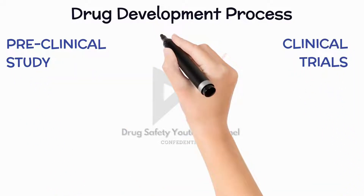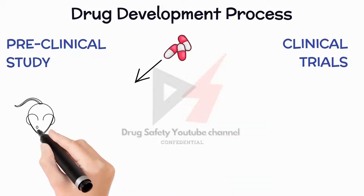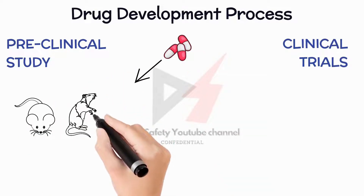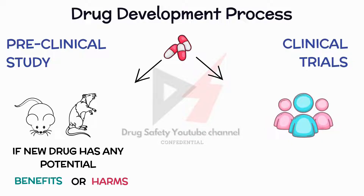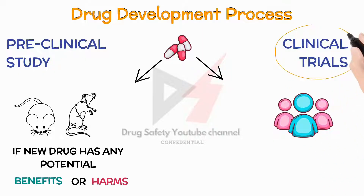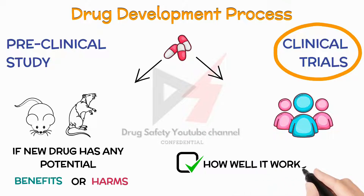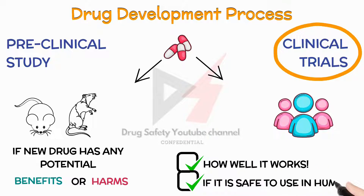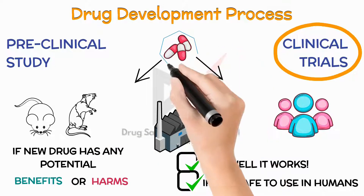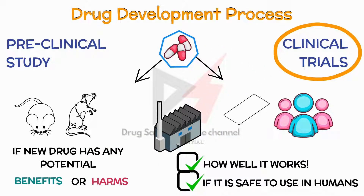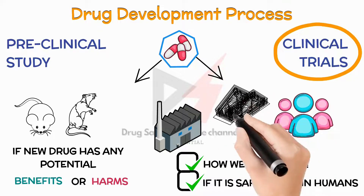During the preclinical study phase, the new medicine undergoes testing in animals such as mice or rats to see if it has any potential benefits or harms. While in the clinical trial phase, the new medicine is tested in humans to see how well it works and if it's safe to use. These clinical trials are conducted by pharmaceutical companies who have formulated the new medicine, and those companies are often the sponsors of the trials as well.